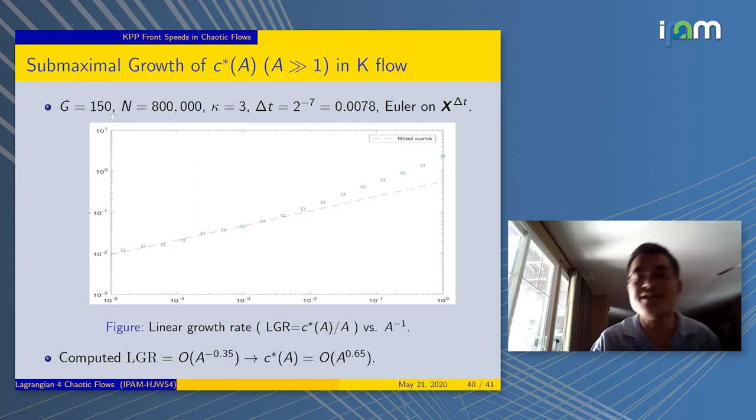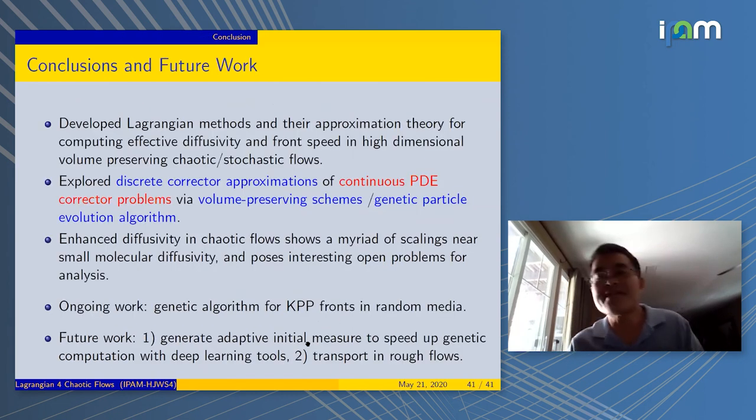Here's our computation with 800,000 particles, 150 generations of the fitness survive evolution. Then you get this curve of c* and it goes down to zero with some slope. The numerical slope is 0.65. Not too far from the scaling, the coarse scaling analysis.